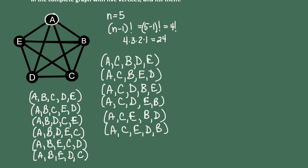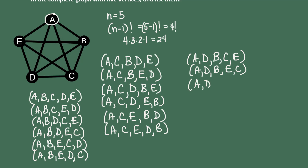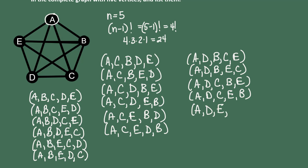Now, what if the cycle starts with AD? The remaining letters are B, C, and E. We start with B: A→D→B→C→E→A and A→D→B→E→C→A. Then changing the third letter to C: A→D→C→B→E→A and A→D→C→E→B→A. And finally the E: A→D→E→B→C→A and A→D→E→C→B→A. We've done ABs, ACs, and ADs.